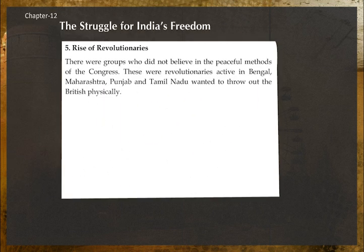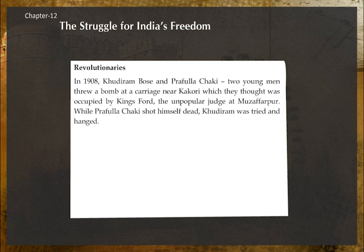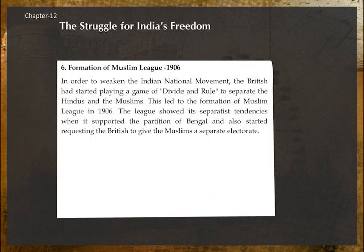Rise of revolutionaries: There were groups who did not believe in the peaceful methods of the Congress. These revolutionaries were active in Bengal, Maharashtra, Punjab, and Tamil Nadu and wanted to physically throw out the British. In 1908, Khudiram Bose and Prafulla Chaki, two young men, threw a bomb at a carriage near Muzaffarpur, which they thought was occupied by the unpopular judge. While Prafulla Chaki shot himself dead, Khudiram was tried and hanged.